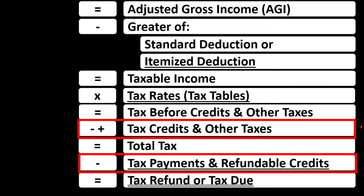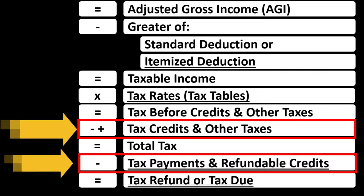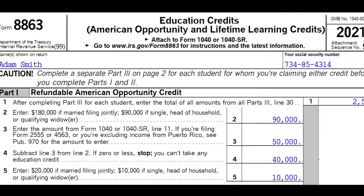We have two main categories for credits: non-refundable credits and refundable credits. The non-refundable credits don't take the tax liability below zero, but the refundable credits may, which means you could possibly get a refund that's more like a benefit program. Many credits may have both a non-refundable component and a refundable component.